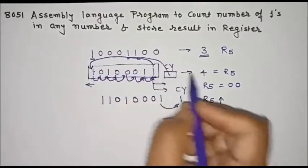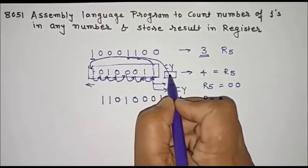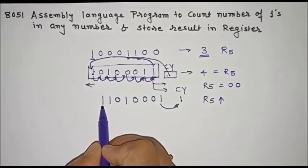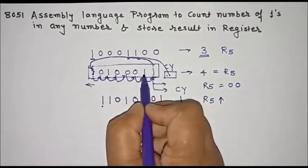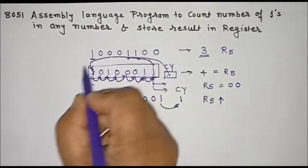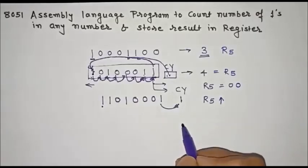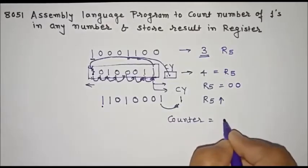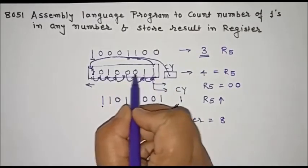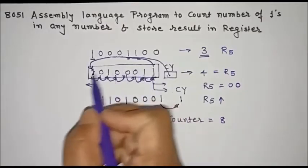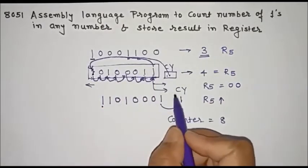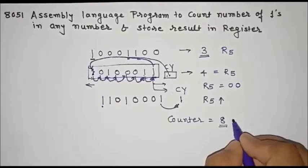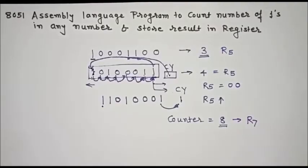If we are using rotation with carry, the contents of carry will be stored as the new MSB. We are not interested in the new MSB — we want to check only the eight bits one by one. So we have to perform this rotation operation eight times. We'll initialize the counter with value eight because we want to check all eight bits whether each is one or zero.